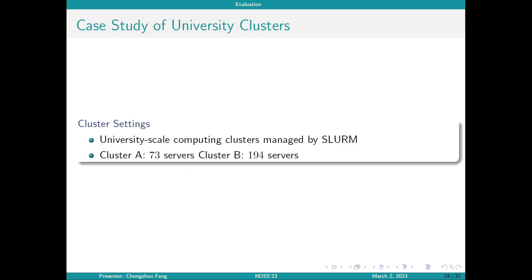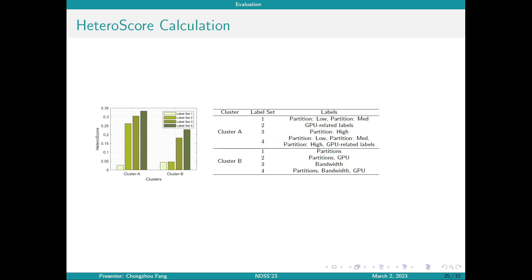We utilize two clusters from High Performance Computing Center at UC Davis to conduct our case study. Both clusters are managed by SLURM. One consists of 73 servers, while the other consists of 194 experiment nodes. The heteroscore calculation results are shown on this page. We calculate heteroscore based on different label selections because we cannot change the server settings of those clusters because they are in production.